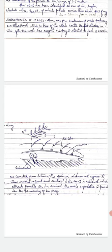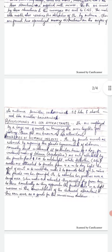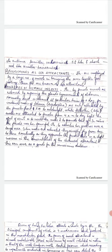Next comes pheromones as sex attractants. Pheromones are employed by a large number of insects in bringing the sexes together for mating. These pheromones are known as sex attractants. These pheromones as sex attractants may be of two forms — they may be produced by female insects and they may also be produced by male insects. So let us do it one by one.